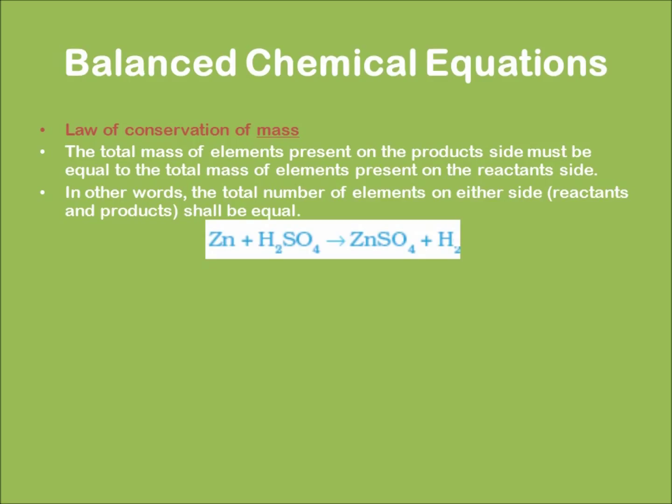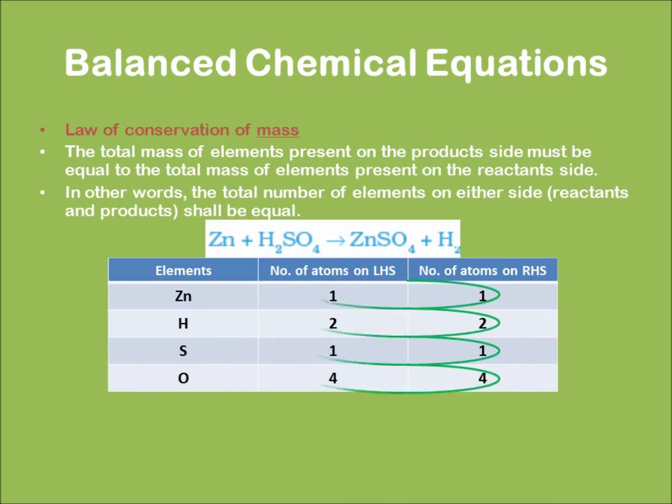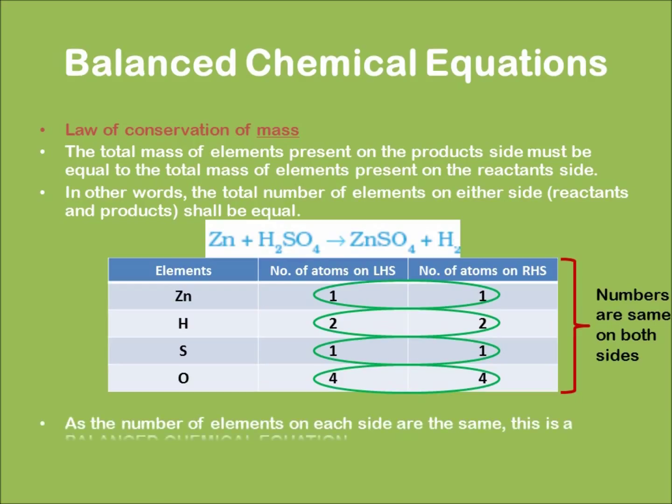Consider the following example. Now I list down the number of elements in a tabular form as shown below. One can clearly see that the number of elements on the LHS and RHS are same for all the atoms. Hence, the given equation is a balanced chemical equation.